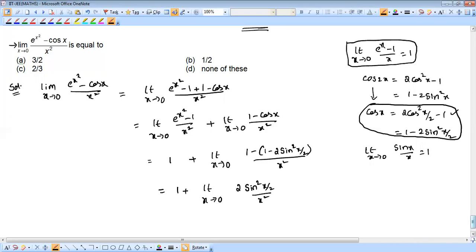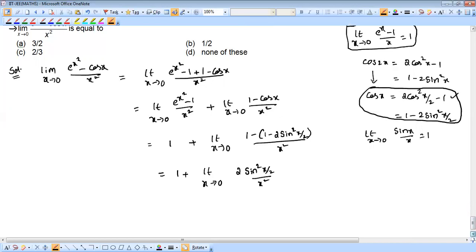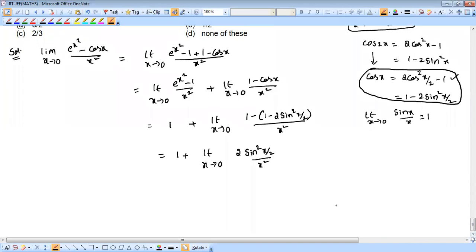So 1 plus 2 into limit x tends to 0, sin square x by 2 by x square. Now when you already have known the formula, limit x tends to 0, sin x by x, which is 1. If we are going to apply this one, we cannot apply exactly. Why?